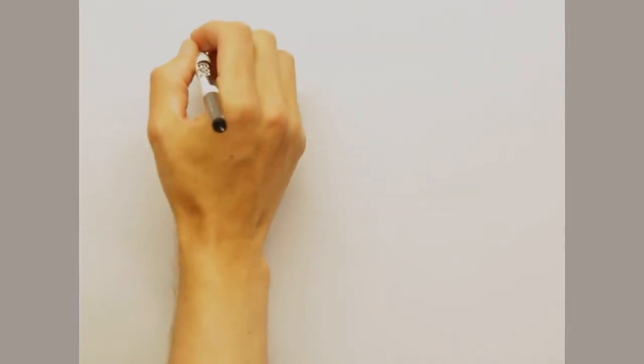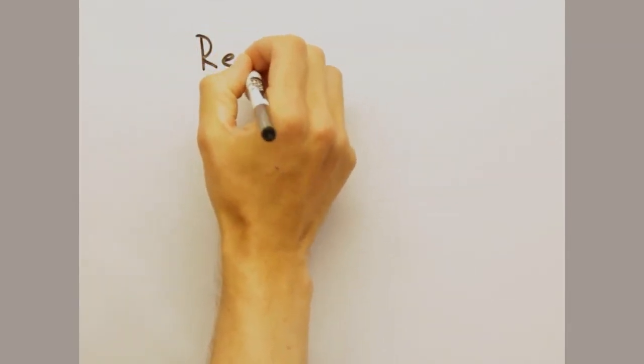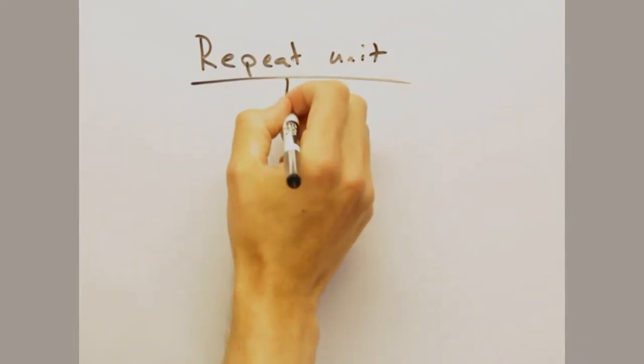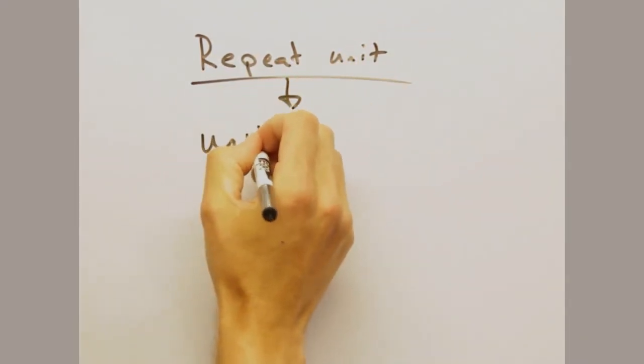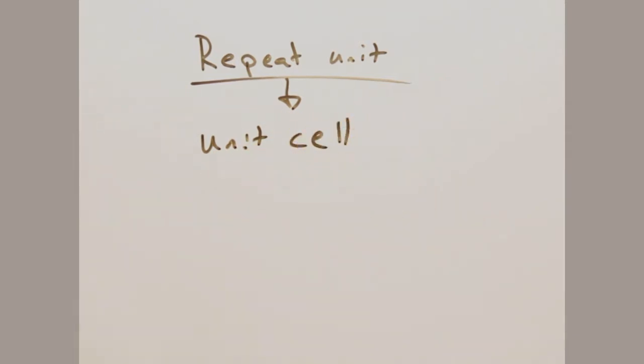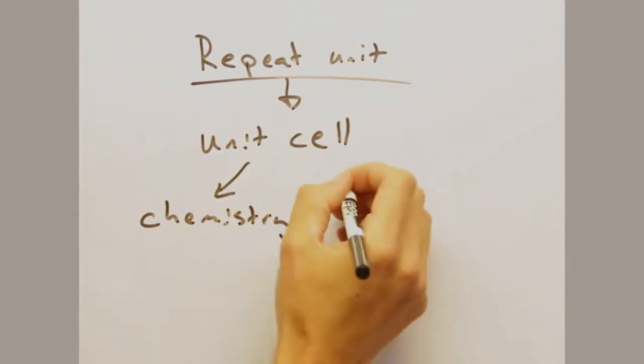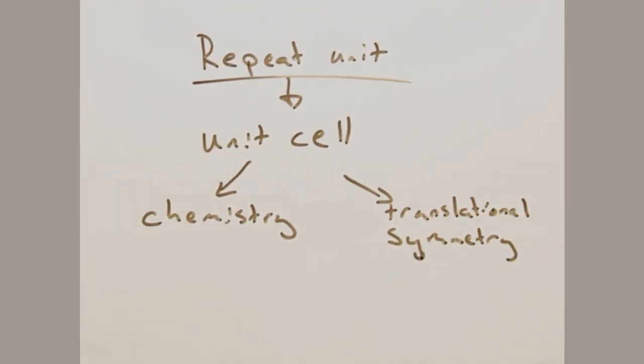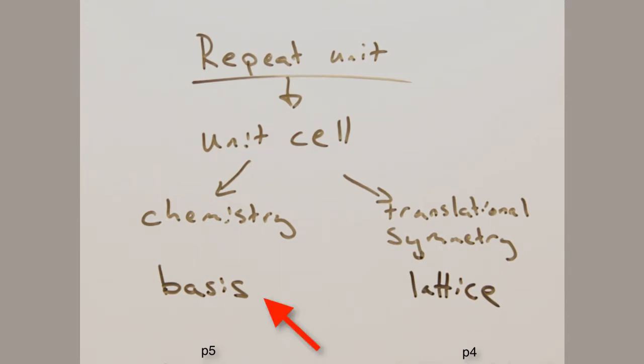Given that crystals have this sort of symmetry, there's going to be some repeat unit that when repeated through translation creates the entire crystal. We call this the unit cell and it describes the chemistry and symmetry of the crystal. But how are we going to separate them? We'll do so through two terms, called the lattice and the basis. We associate the overall symmetry of the crystal with a set of points called the lattice, while the chemistry of the crystal is described by the basis.